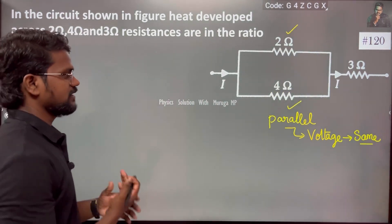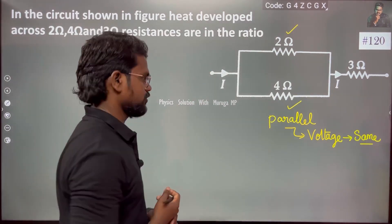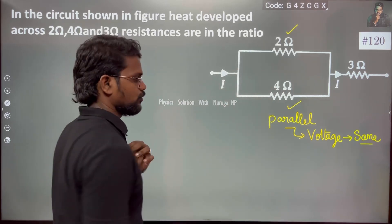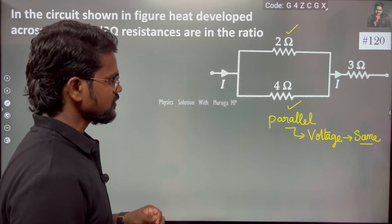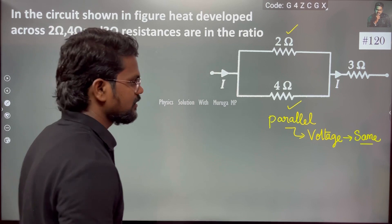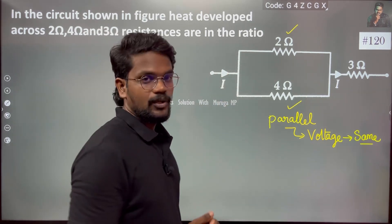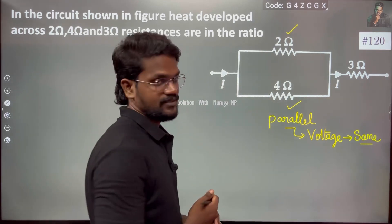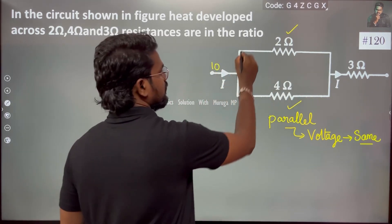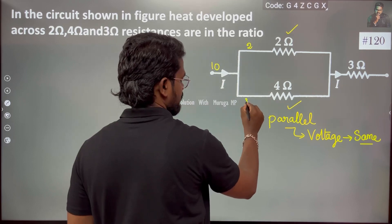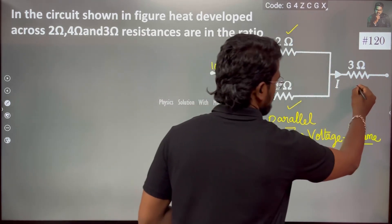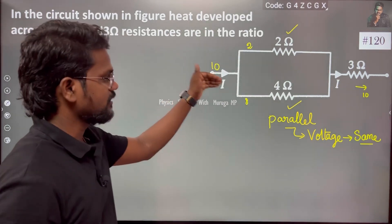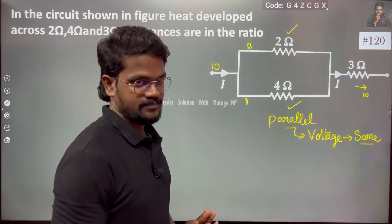The total current is I. For the parallel branch, the 2Ω and 4Ω resistors are in parallel, so the voltage across them is the same. The current splits — let's call the current through the 2Ω branch I1, and the current through the 4Ω branch I2. The total current I splits into I1 and I2.